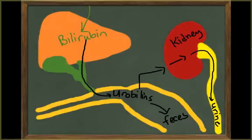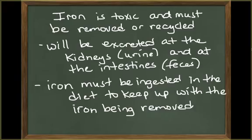The iron that is released can be toxic to the cells, so it too must be recycled. About 26 mg of iron will be incorporated into new hemoglobin molecules each day. The rest of the iron will be bound to protein carriers and excreted at the kidneys and the digestive tract. To keep up with this loss of iron, one must obtain iron in the diet by ingesting 1–2 mg per day. Too little iron can cause an iron deficiency anemia, and too much iron can build up in the liver and cardiac tissues.